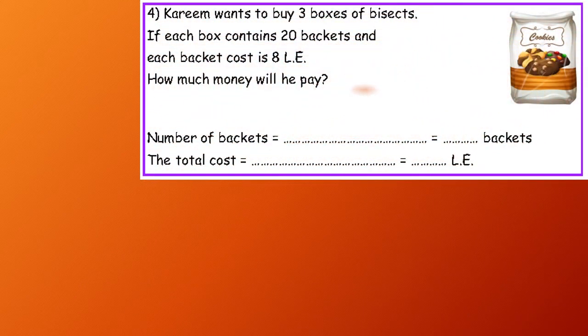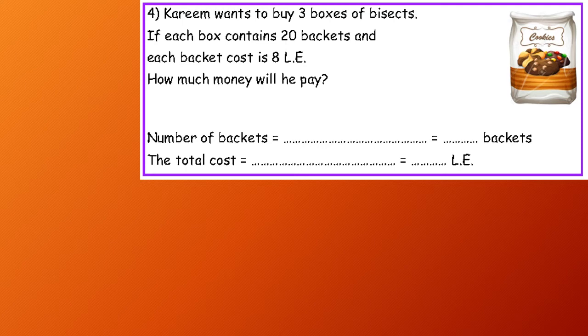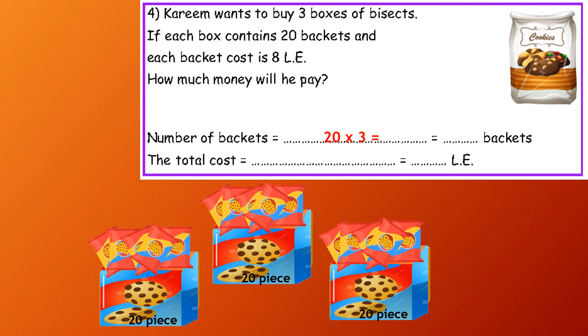Number four: Kareem wants to buy three boxes of biscuits. If each box contains 20 packets, and each packet costs £8. So 20 by 3 for number of all packets. Three boxes, in each box 20 packets, so 60 packets in the three boxes.